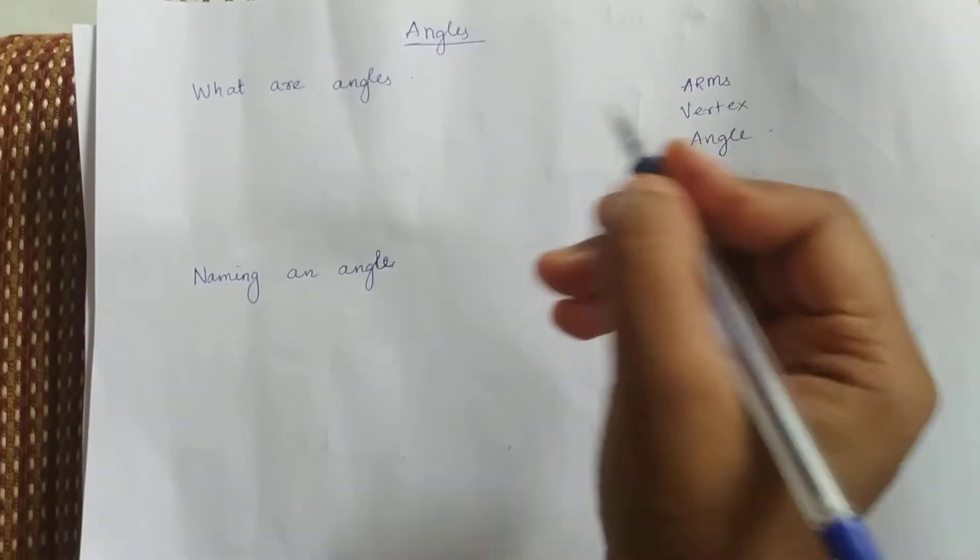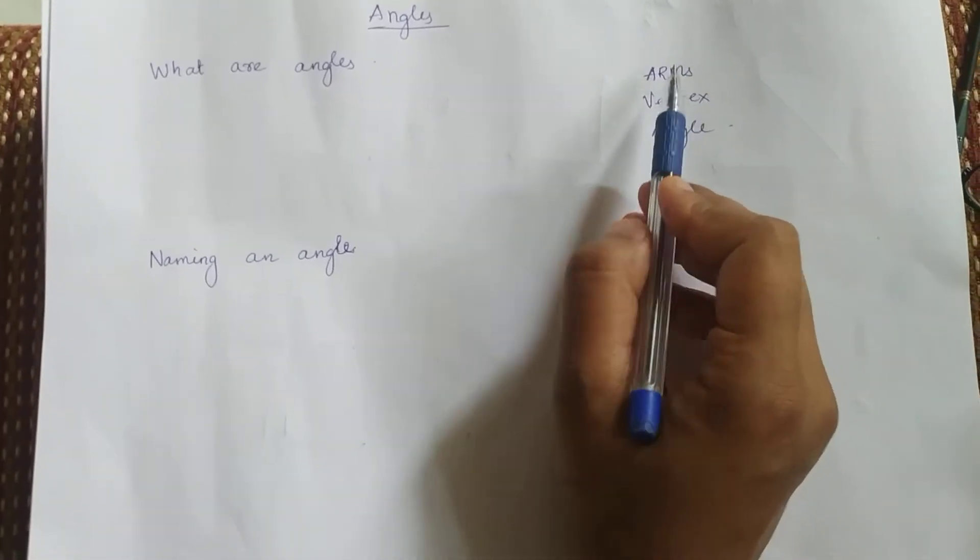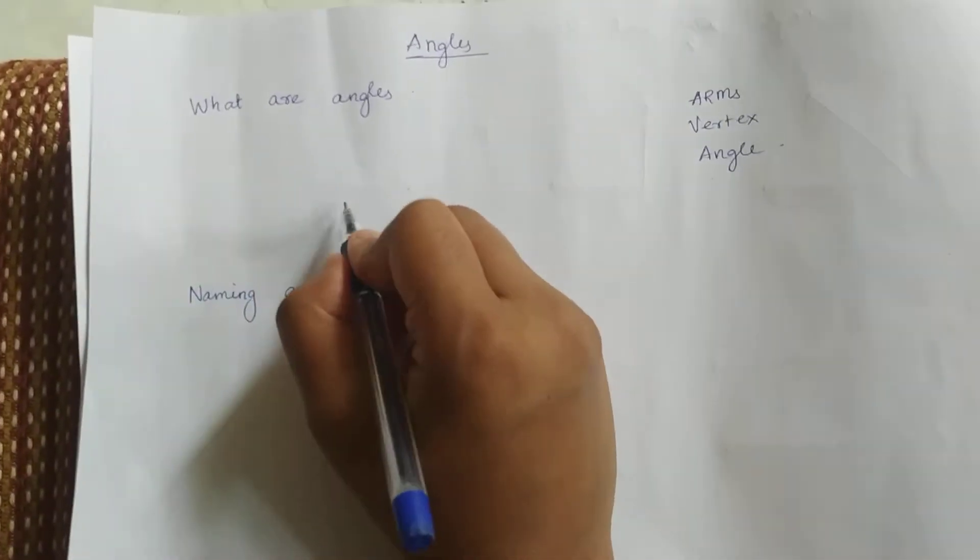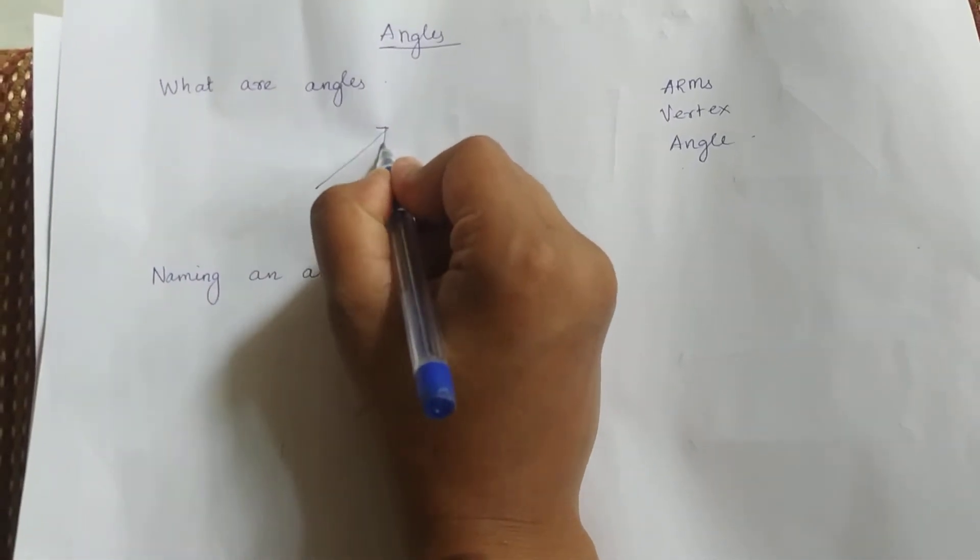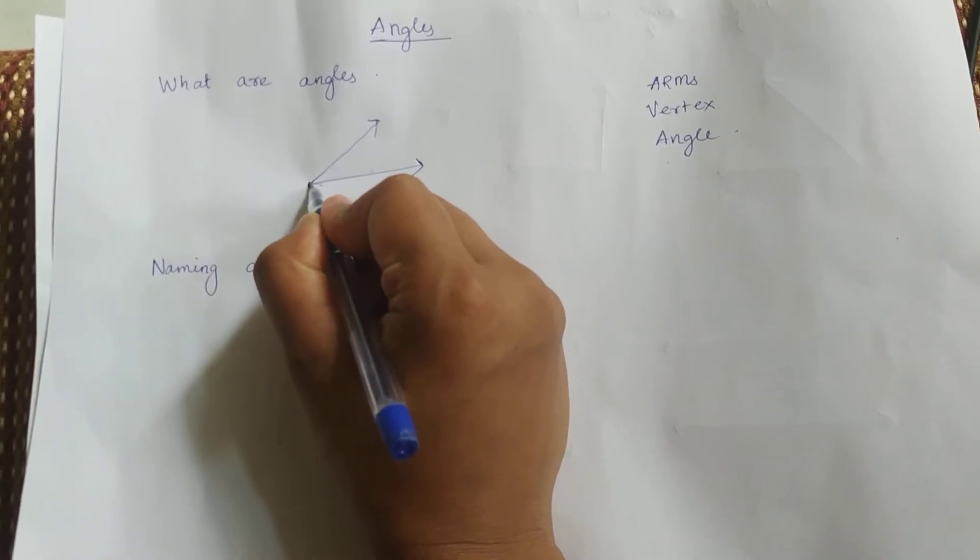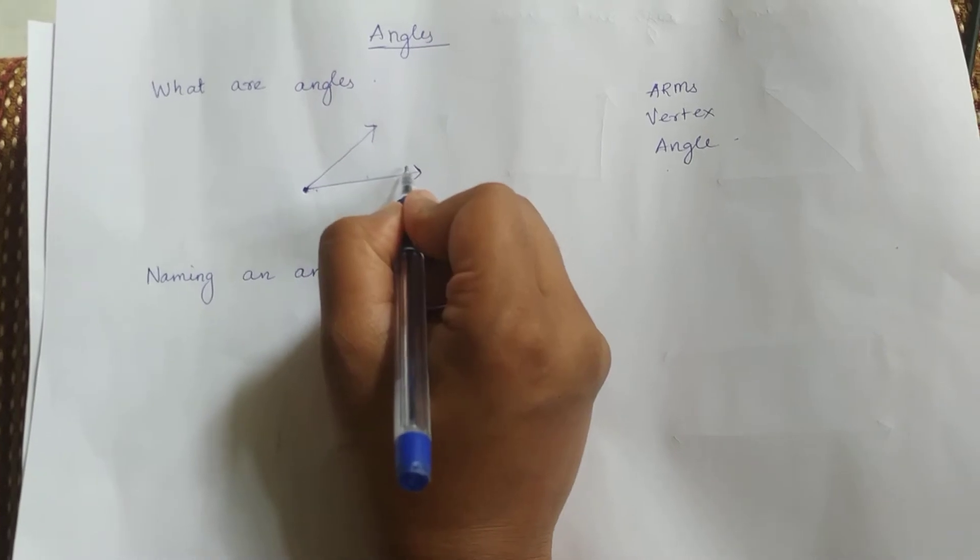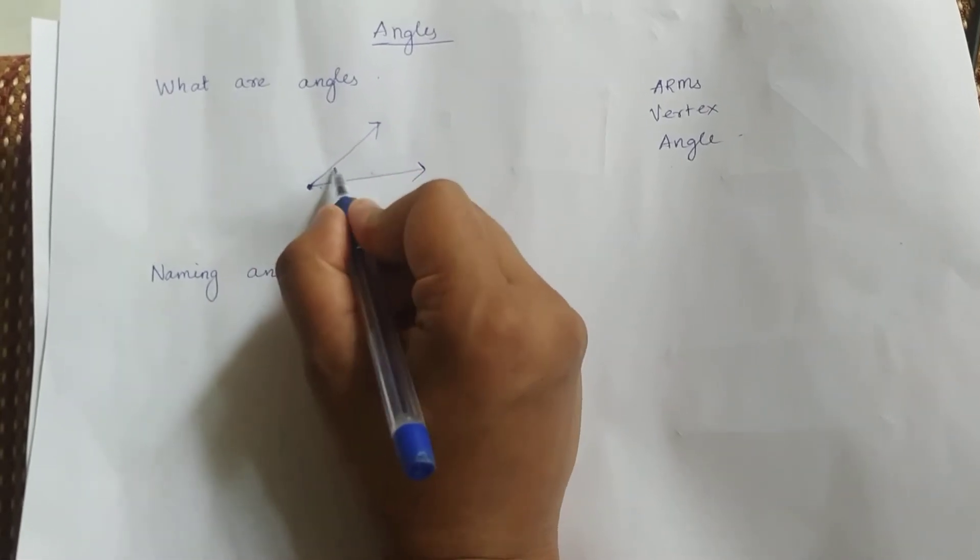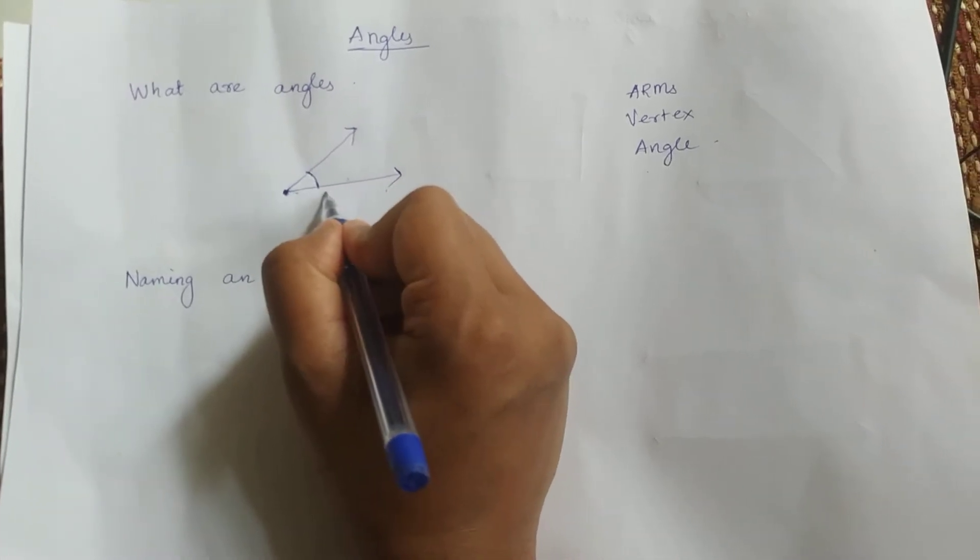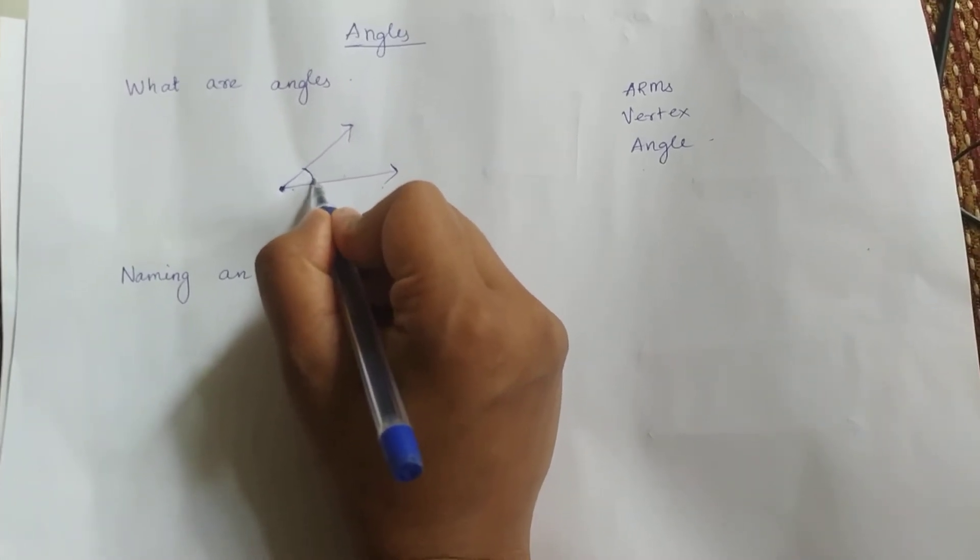Angles have three parts: arms, vertex and angle. An angle is made of two lines which have a common point. If two lines go from this point, then it forms an angle. The space between these two lines is called an angle.